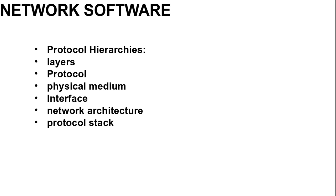A set of layers and protocols is called a network architecture. The specification of an architecture must contain enough information to allow the implementer to write the program or build the hardware for each layer so that it will correctly obey the appropriate protocol. Neither the details of implementation nor the specification of the interface is part of the architecture, as these are hidden inside the machines. It is not even necessary that the interfaces on all machines in a network be the same. A list of protocols used by a certain system, one protocol per layer, is called a protocol stack.